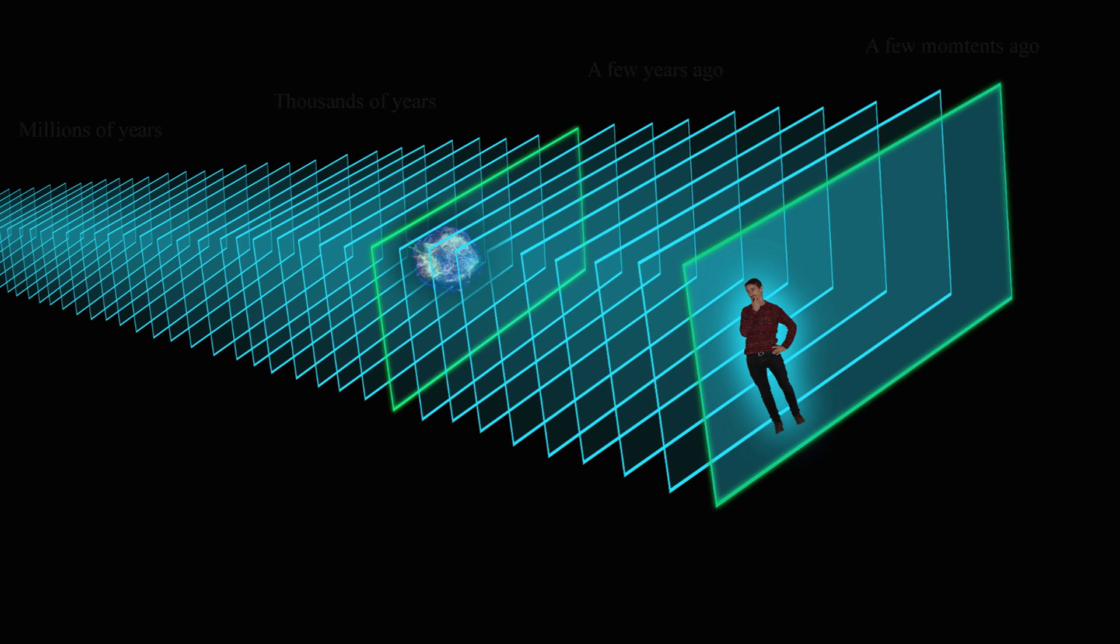Instead of layers of space-time, we think of it more as a loaf of time. Each slice has a defined time in the past. This loaf of time is completely unique to each and every one of us.